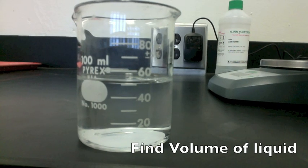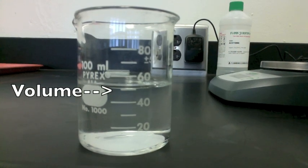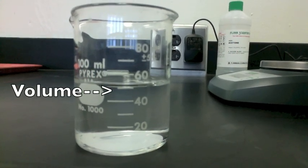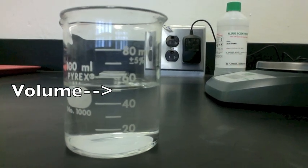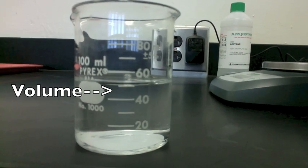Now we need a volume. First determine the scale. To go up 40 to 60, there are two lines. Each line is worth 10. The meniscus is reading at 50 milliliters.